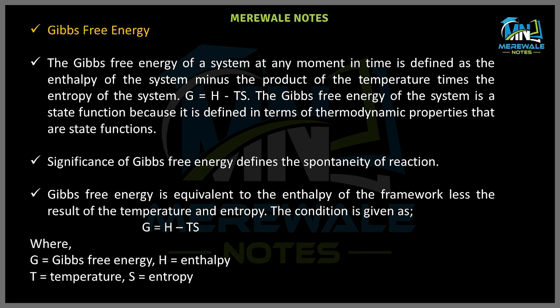First of all, we are going to talk about the definition. The formula of Gibbs free energy is G = H − TS. The Gibbs free energy of a system at any moment in time is defined as the enthalpy of the system minus the product of the temperature times the entropy of the system.